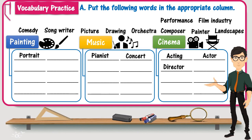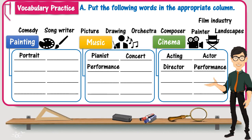Performance — to perform means to do something, to act on stage. The word can be used in the domain of cinema and also music. The next word is film industry, which refers to companies, institutions, studios, and people who are involved in filmmaking and film production, so related to cinema. Comedy is a style of movies, so definitely related to cinema as well.